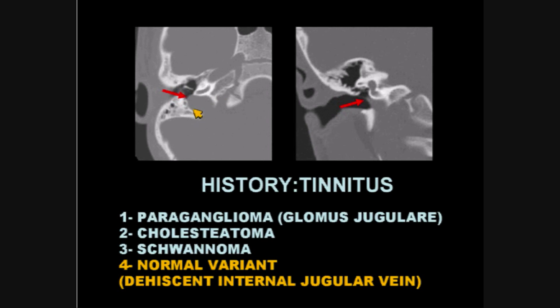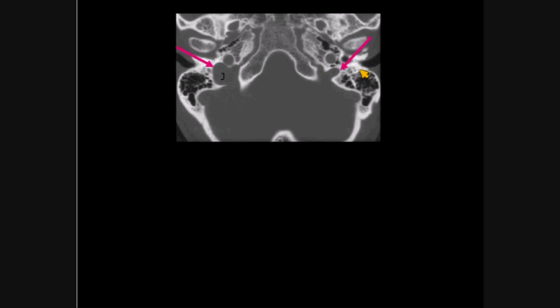Had this been a glomus jugulari, the cortex around the margin of the jugular foramen would have been eroded, usually quite significantly. We'll discuss those in a little while.